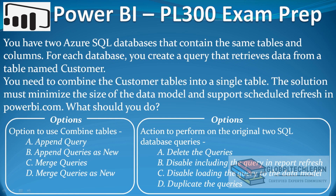The given case is: you have two Azure SQL databases that contain the same tables and columns. For each database, you create a query that retrieves data from a table named customer. You need to combine the customer tables into a single table. The solution must minimize the size of the data model and support scheduled refresh in Power BI.com. What should you do?